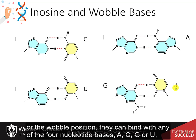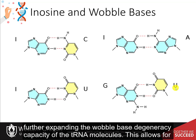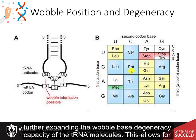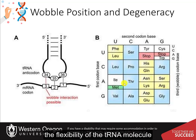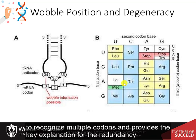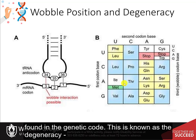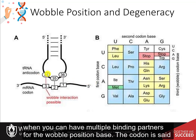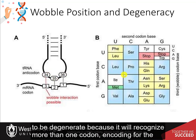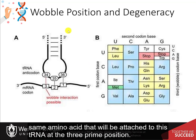This further expands the wobble base degeneracy capacity of the transfer RNA molecules, allowing the tRNA to recognize multiple codons and providing the key explanation for the redundancy found in the genetic code. This is known as degeneracy — when you can have multiple binding partners for the wobble position base. The codon is said to be degenerate because it will recognize more than one codon encoding for the same amino acid that will be attached to this tRNA at the three prime position.